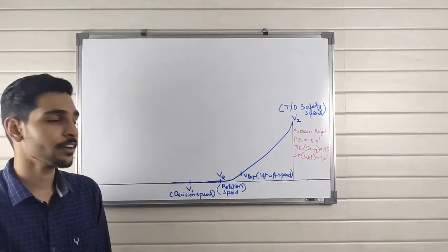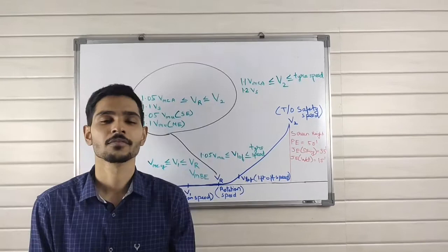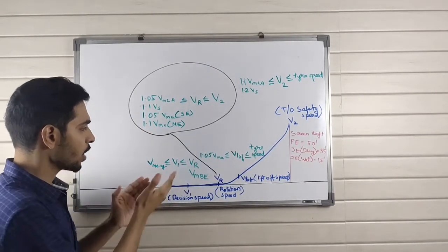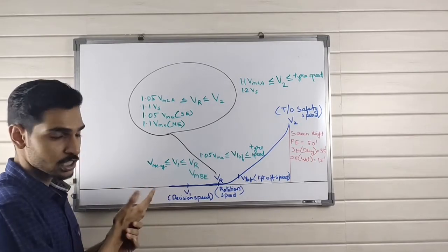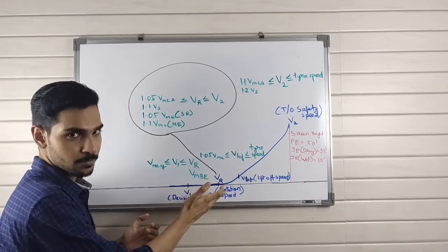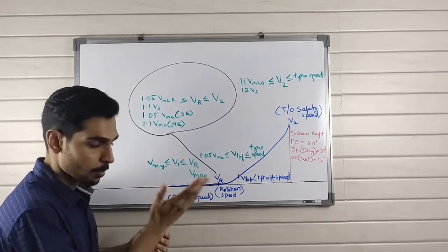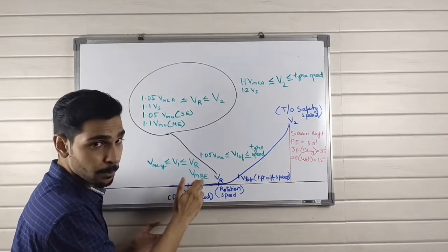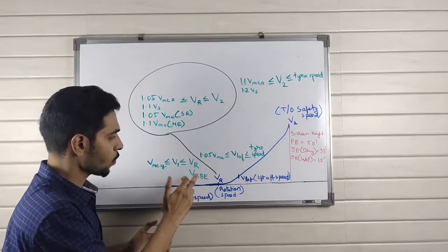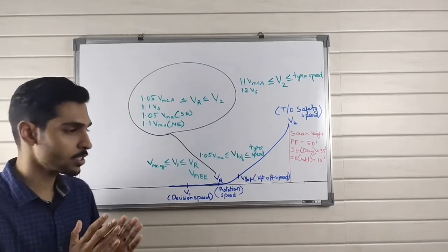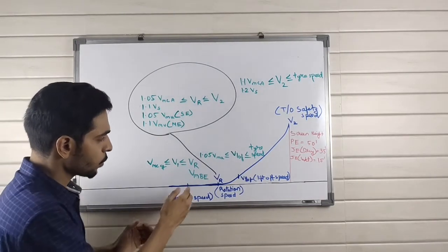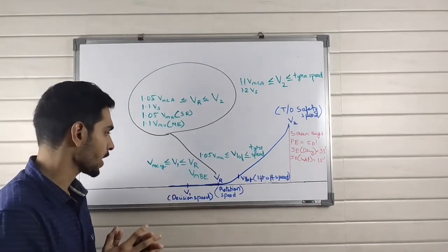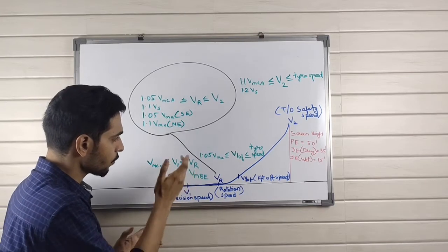Now we look at the different limitations of the speed. First up, we have V1. The lower limit of V1 is VMCG, and the higher limit is VR and VMBE. What is VMBE? It is the maximum brake energy speed. If you exceed this speed, there is a possibility that the brakes may explode. So the higher limit is both VR and VMBE, and the lower limit of V1 is VMCG.